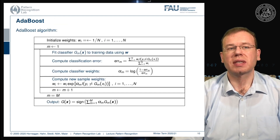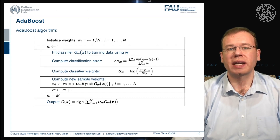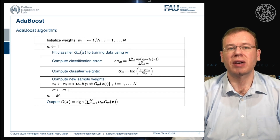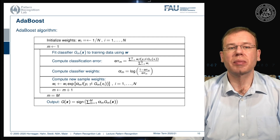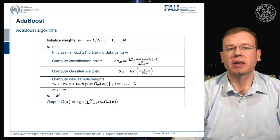This brings us to the AdaBoost iteration scheme. You initialize weights with a uniform distribution, set the iteration counter to one, fit the first classifier on the training dataset using current weights, and compute the classification error as a weighted sum of misclassifications. Then you update the classifier weights, using the classification error to guide which classifier to trust more or less. You compute new sample weights using the classification loss of the joint classifier, then iterate until you have built the desired number of classifiers m, and finally output the completely trained classifier.